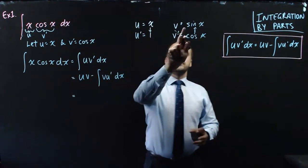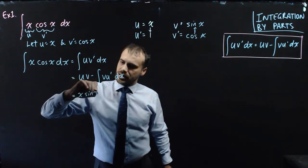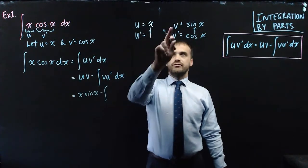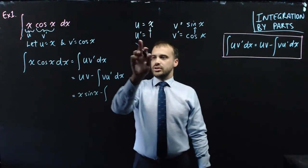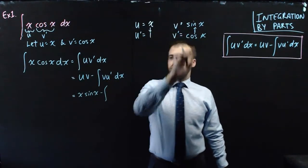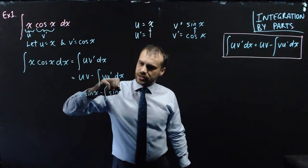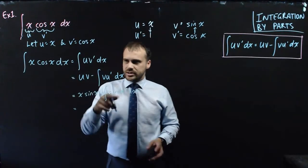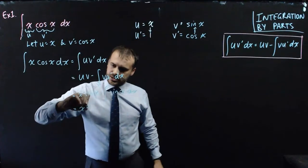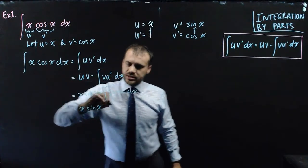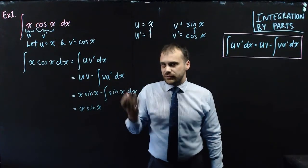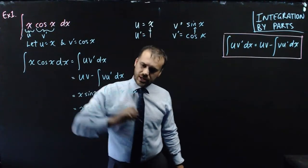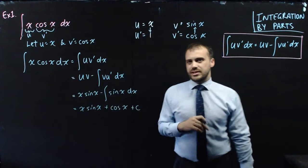So uv gives us x sin x, minus the integral of v times u': that's sin x times 1, so we're just finding the integral of sin x with respect to x. The integral of sin x is −cos x, so it's minus negative cos x, giving positive cos x. Don't forget your plus c on the end.